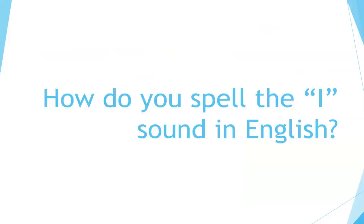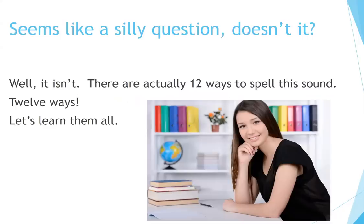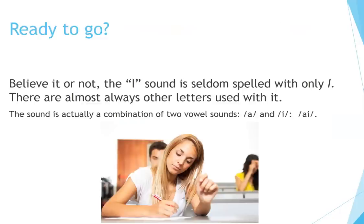How do you spell the I sound in English? Seems like a silly question, doesn't it? Well, it isn't. There are actually 12 ways to spell this sound. 12 ways. Let's learn them all. Believe it or not, the I sound is seldom spelled with only I. There are almost always other letters used with it. The sound is actually a combination of two vowel sounds: A and E.